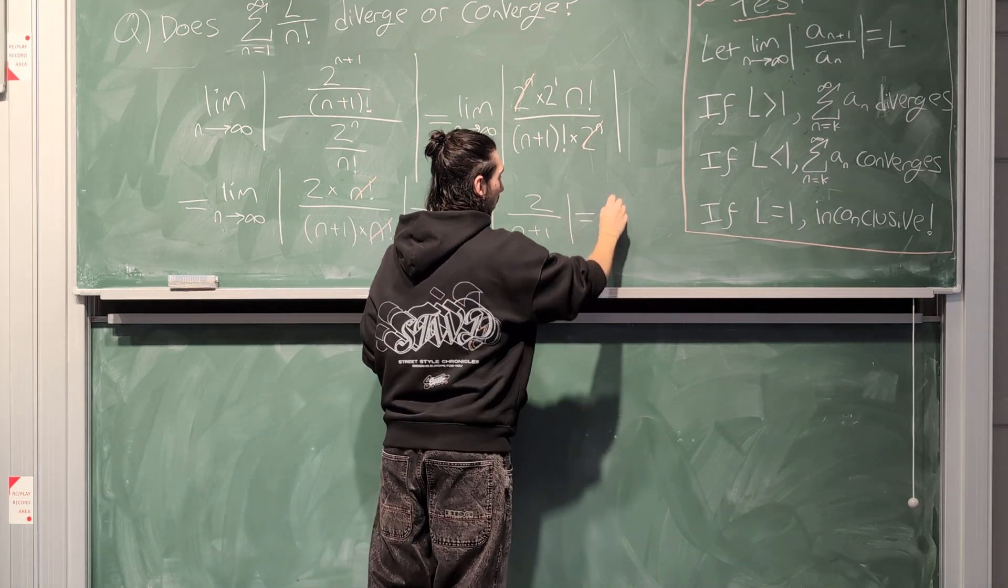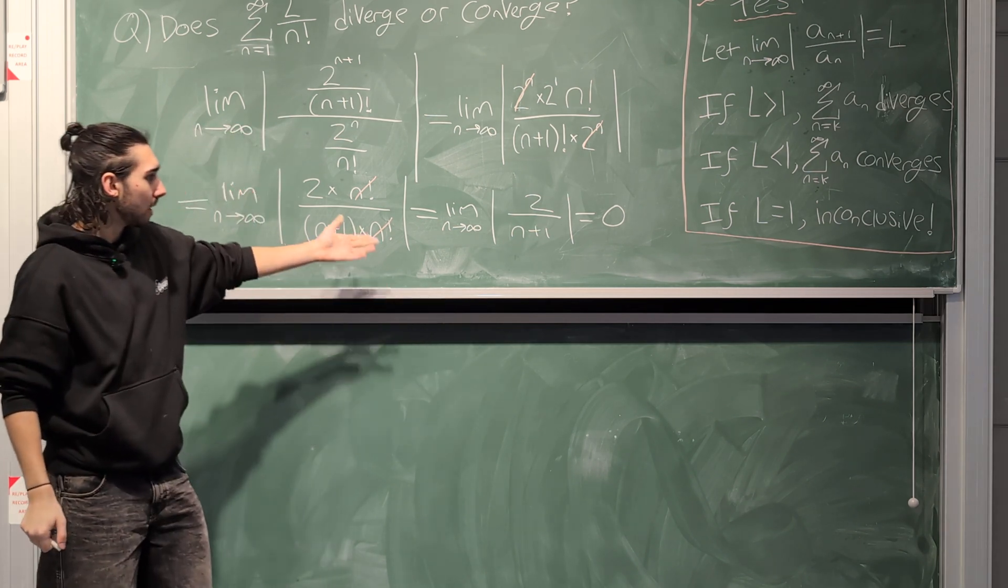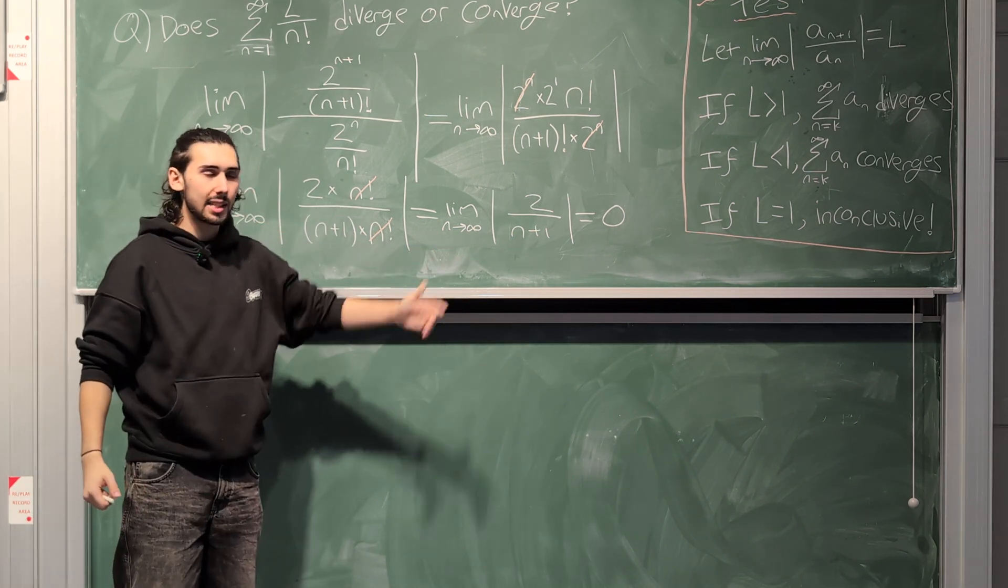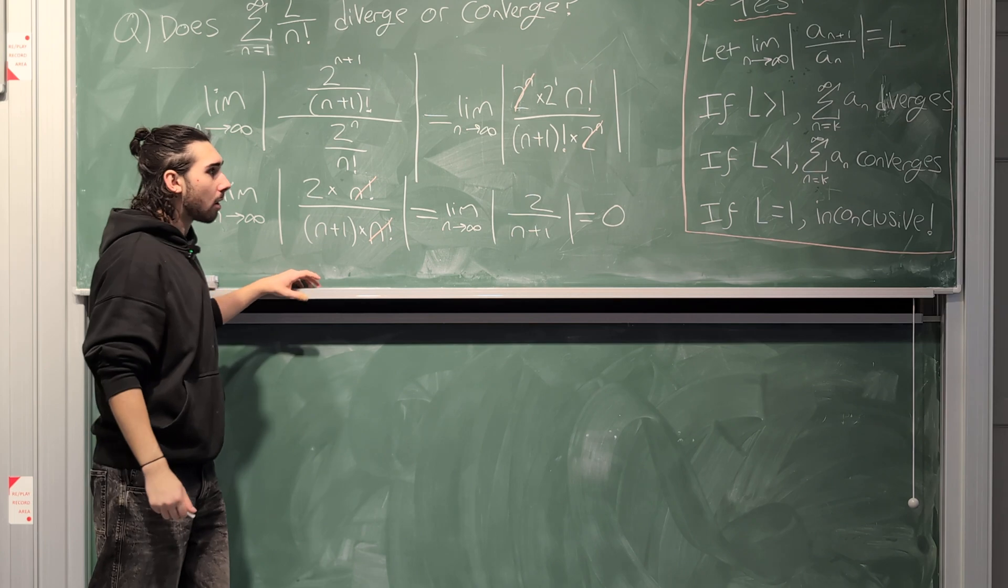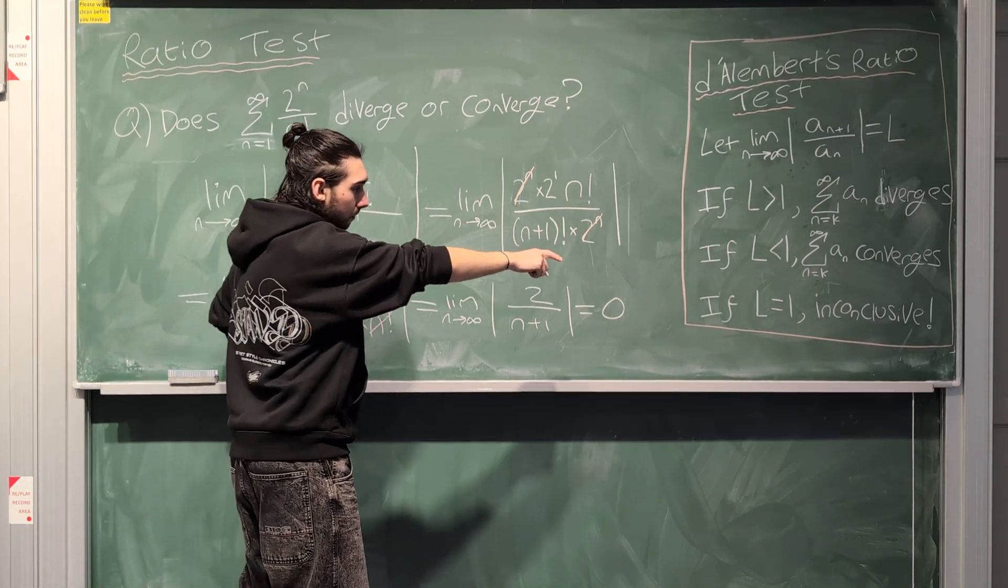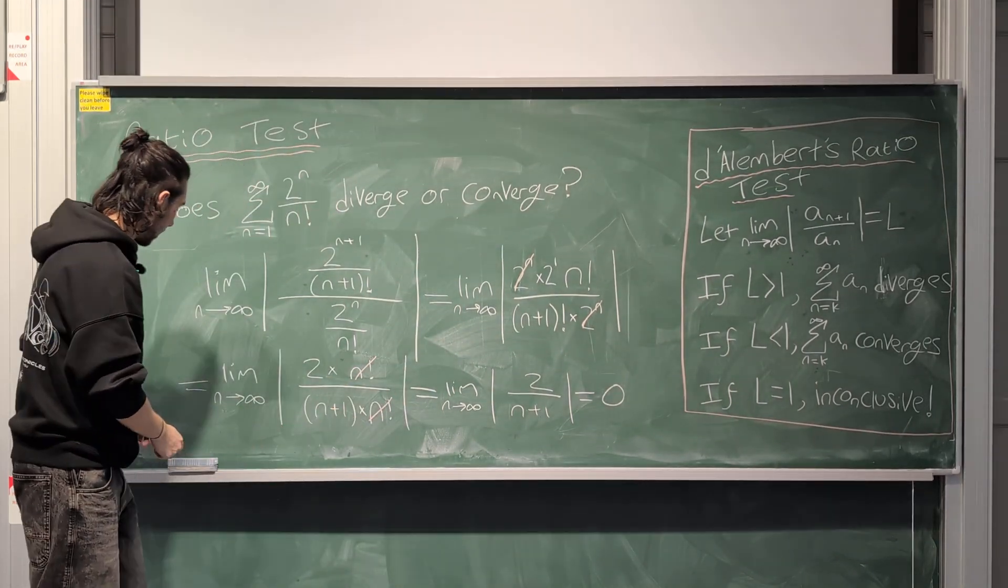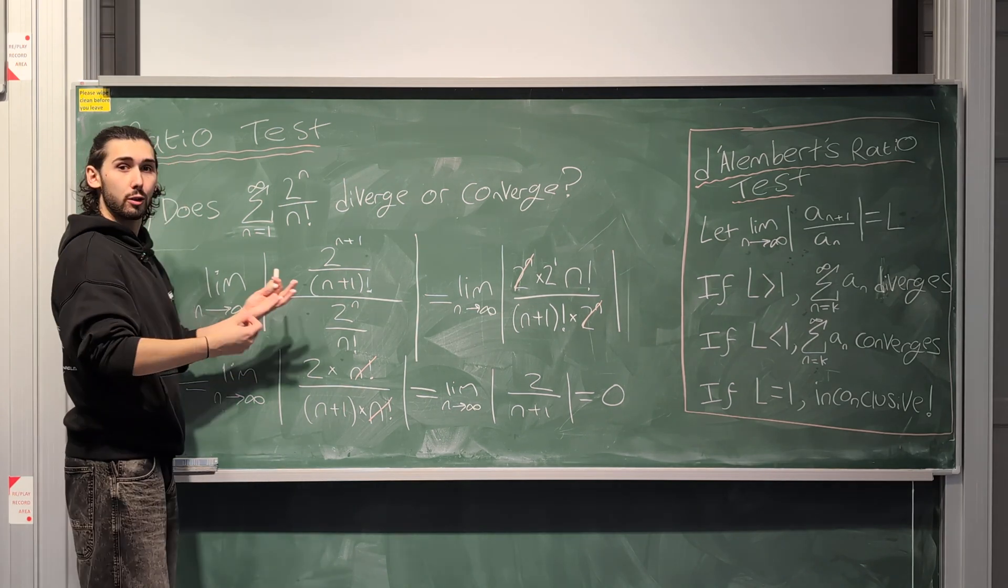And then what do I have here? Well, I have the limit as n approaches infinity of 2 over n plus 1. But this is equal to 0. Hopefully that's clear to see because we're literally doing 2 divided by infinity plus 1. That would give us 0. 0 is less than 1, which means, hey, presto, this converges.